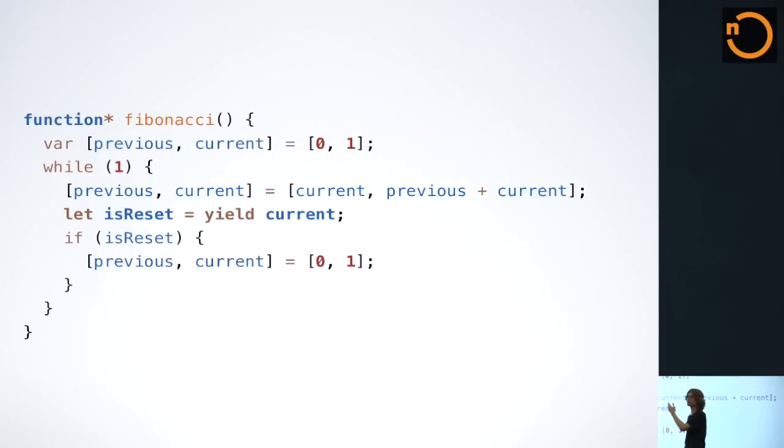You can see that here we're initializing two variables, previous and current. This is using an example of the destructuring assignment syntax. And then we enter this infinite loop. Now, if this were not a generator function, if we were to execute this function outright, our interpreter would see this function and set up a stack frame for it, and because we have an infinite loop in it, that function would never stop.